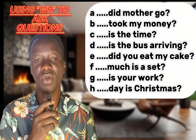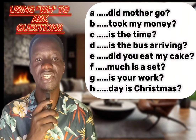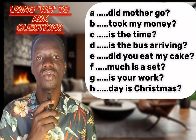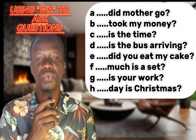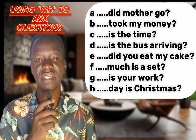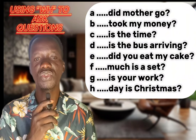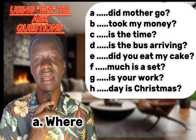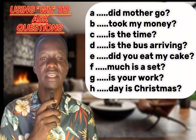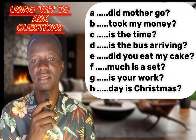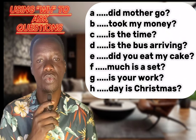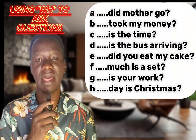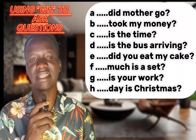Now I have some work for you. Let's dive in. A: '_____ did mother go?' Since 'where' is used to ask about a place, we shall put 'where' there. 'Where did mother go?' — we want to find out where the mother went, so we are asking about a place. The answer is 'Where did mother go?'